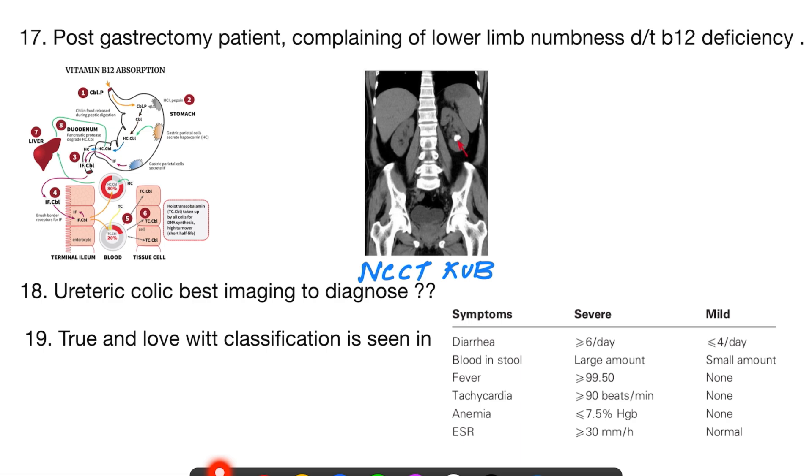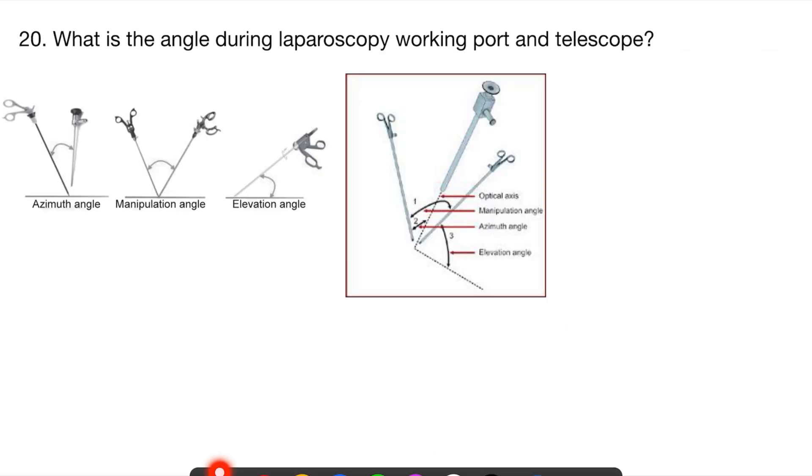Truelove and Witts classification is for ulcerative colitis, where you have symptoms described, and based on that you can divide the patient into mild or severe. It has several components like blood in stool, fever, tachycardia, anemia, ESR, and diarrhea. You can see the criteria if you want.